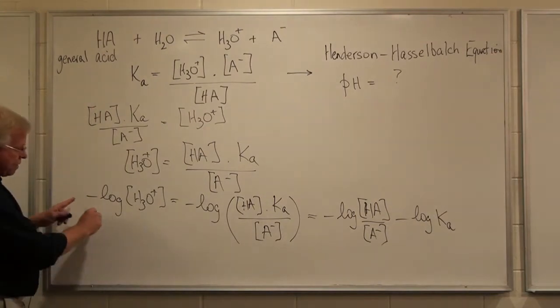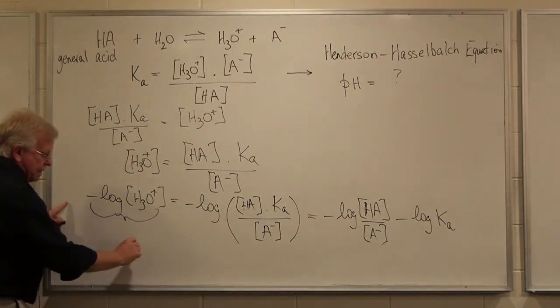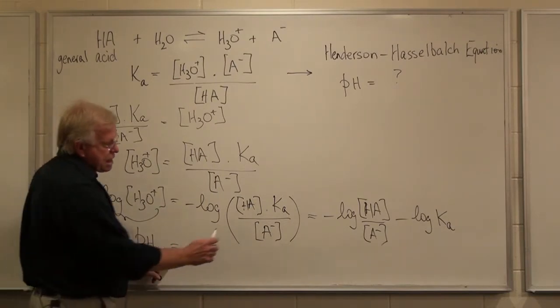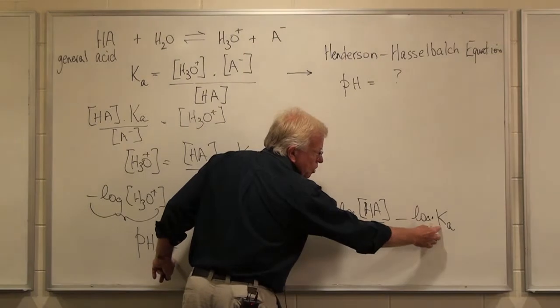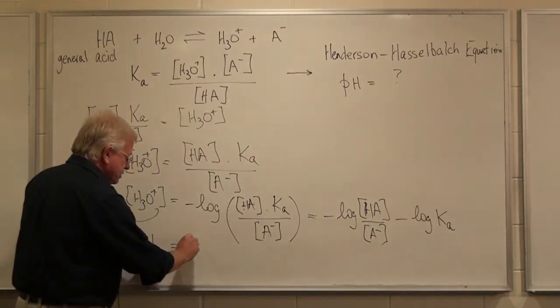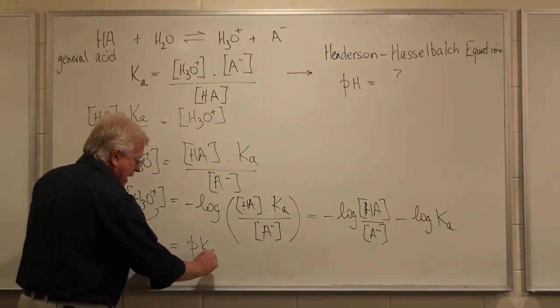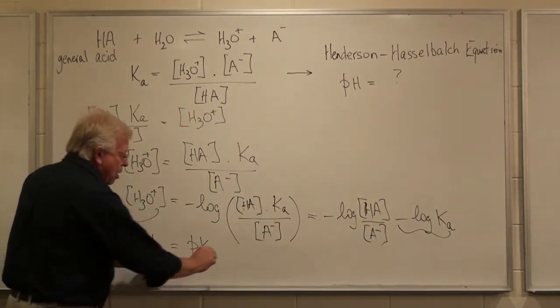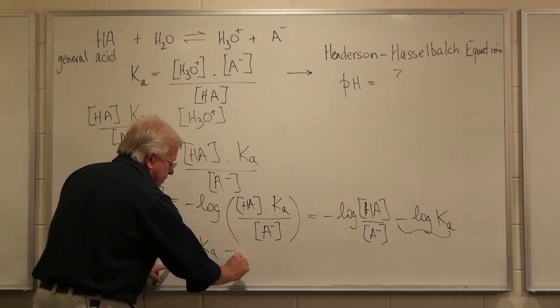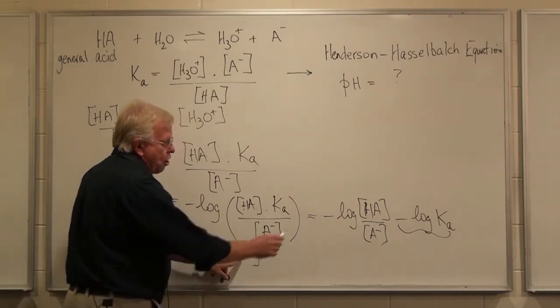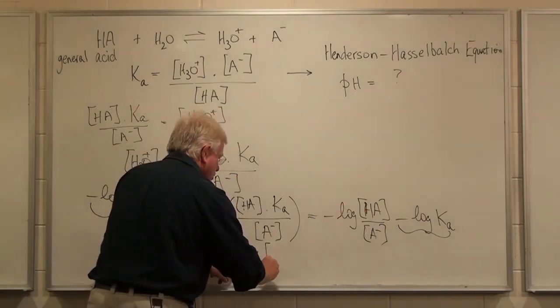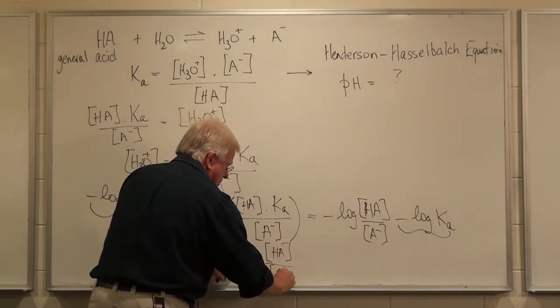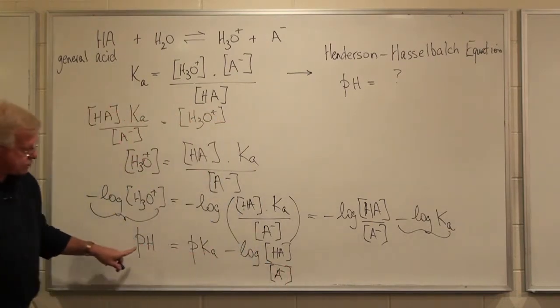And so now this becomes pH, and this is minus the log of Ka, which is pKa. So that whole term there is pKa minus the log of concentration of [HA] over [A-], like so.